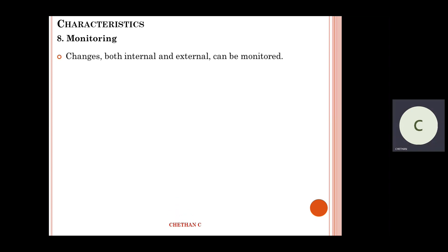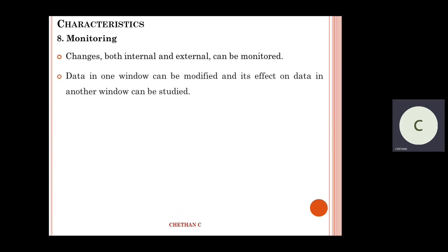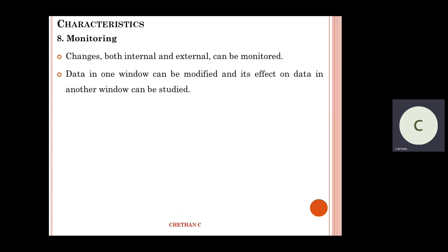Windows can change both internal and external things that can be easily monitored. Data in one window can be modified and its effect on another window can be studied. We do this when sending a quiz or a feedback link — when going for a preview, it will obviously open in the next window.